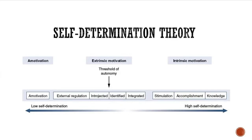As we pass through introjected, we start getting into the phase where autonomy begins to occur. We move toward the identified part of the continuum, where what you're doing feels like a want rather than an ought. This is your willingness to do something — it's more of a choice, and you're doing it because you know it's important and you value it, but you might not necessarily like it. Exercise falls into this category a lot — you recognize its importance and want to do it, but it's still not fully intrinsic because you don't necessarily enjoy it.